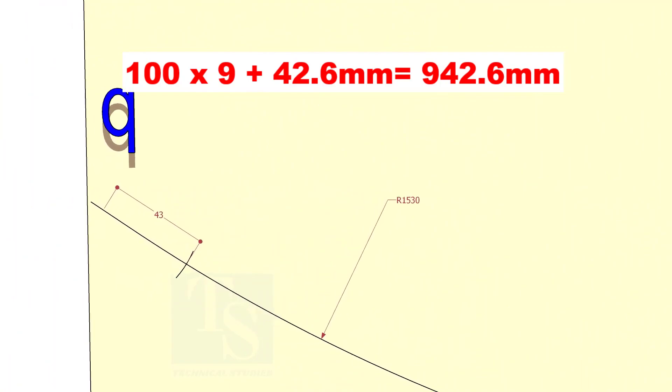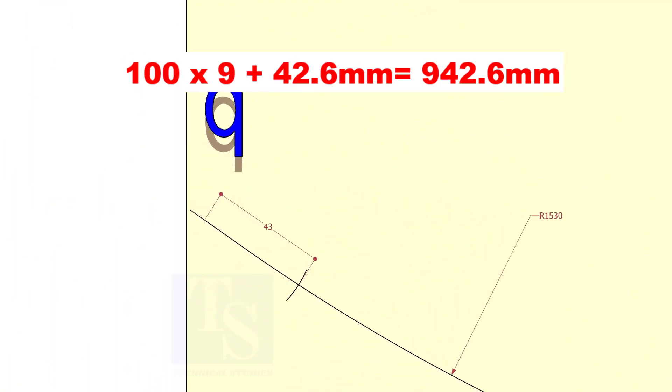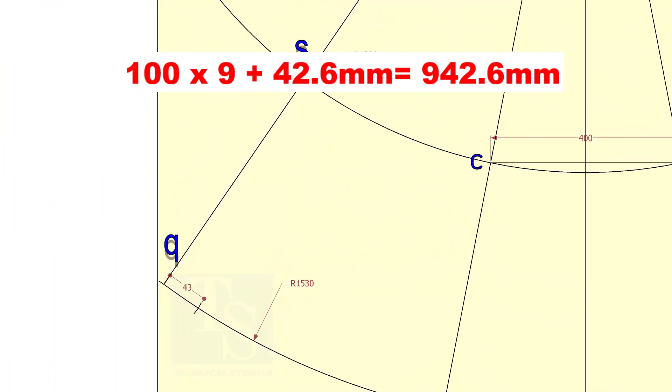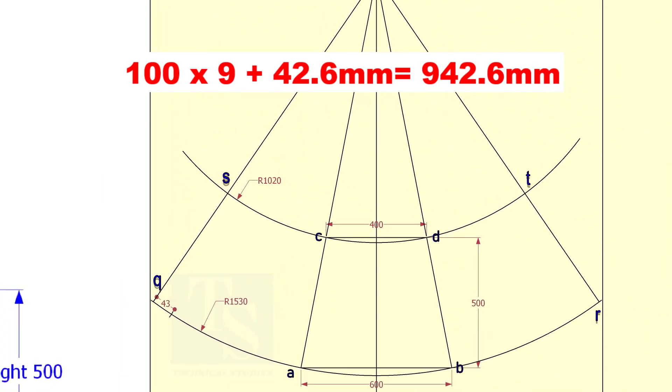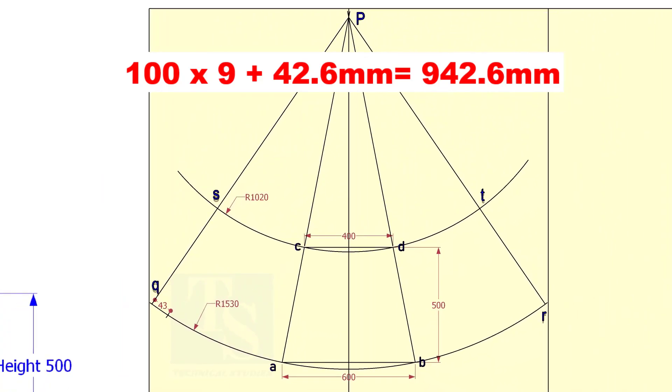Add the 42.6 mm at the end of 900 mm on both sides of the center line. Draw lines connecting this point to P.